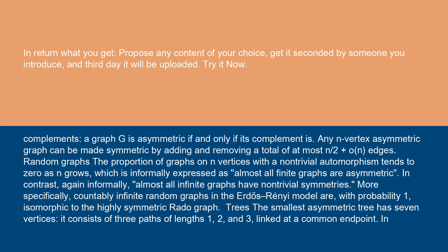Random graphs: the proportion of graphs on n vertices with a non-trivial automorphism tends to zero as n grows, which is informally expressed as almost all finite graphs are asymmetric. In contrast, again informally, almost all infinite graphs have non-trivial symmetries.